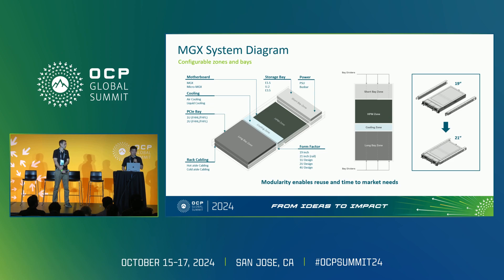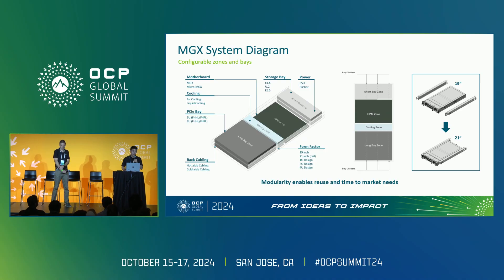The form factor comes in a native 19-inch, covering 1U, 2U, and 4U form factors, and can expand beyond that to 6U as well as 8U. You can use adapter rails to convert that to a 21-inch or into a 20-inch rack. John will go into more detail later on why we started with the 19-inch.